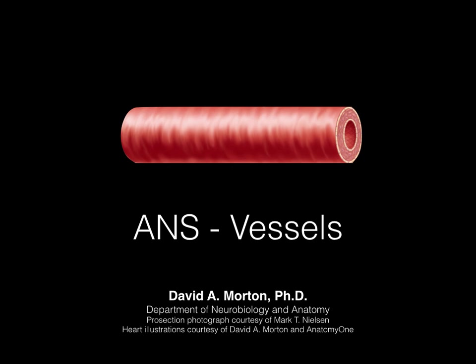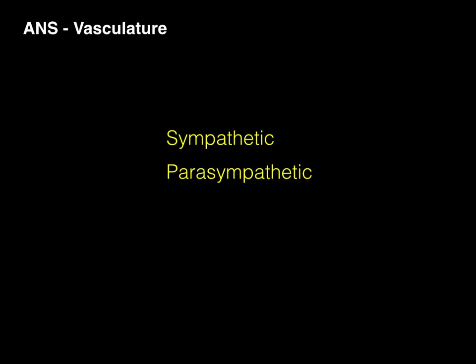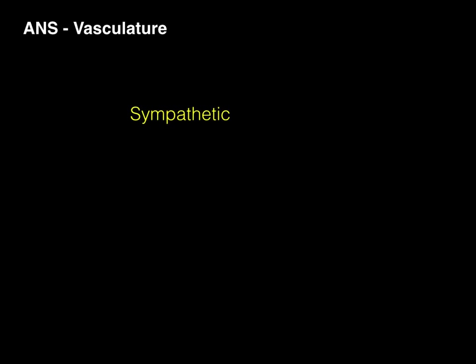We're now going to talk about autonomic nervous system regulation of blood vessels. In this one, we're going to describe the role the sympathetic nervous system has in regulating those vessels and the limited parasympathetic innervation. So first, let's talk about sympathetic innervation of the vasculature.